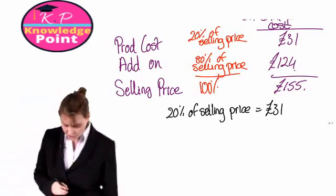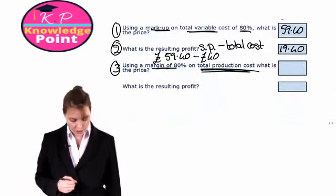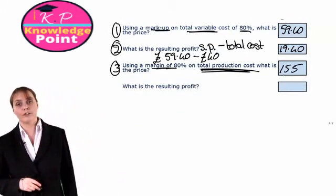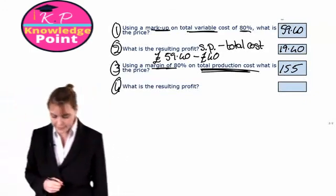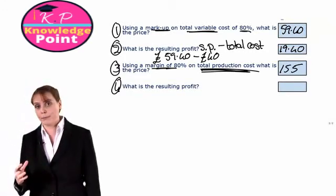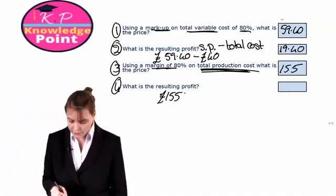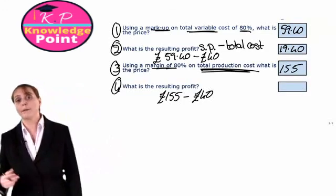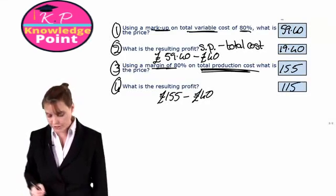Going back to the question, we've used our margin to calculate a selling price of 155 pounds — a much higher selling price. Finally, we calculate the profit based on this new selling price. Profit is selling price minus total cost per unit: 155 minus the total cost of 40 pounds. Applying the margin gives us a profit per unit of 115 pounds.